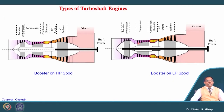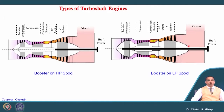There is another possibility where the construction is different. Here we have the HP compressor rotated by the HP turbine, and the LP turbine is connected with the compressor as well as the power shaft. Based on the requirement, the construction of the engine, and the design, these different configurations are possible and you can make your own engine based on your understanding. There are different applications and based on those applications, people configure these engines — and all we are discussing are existing engines.